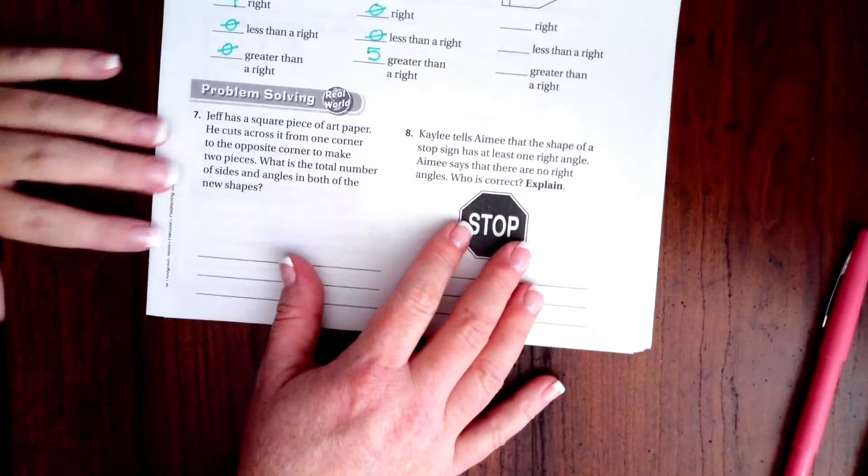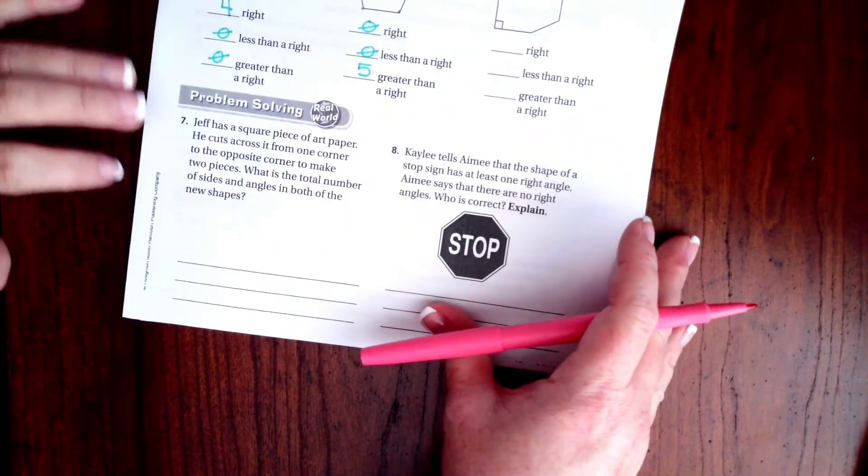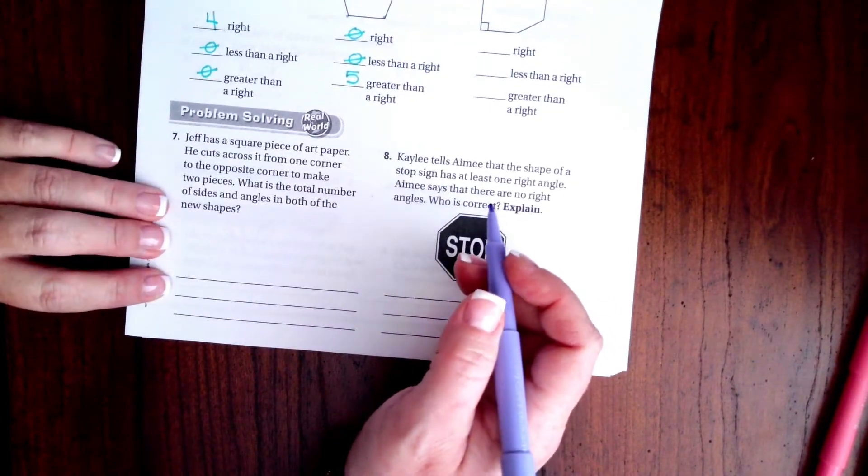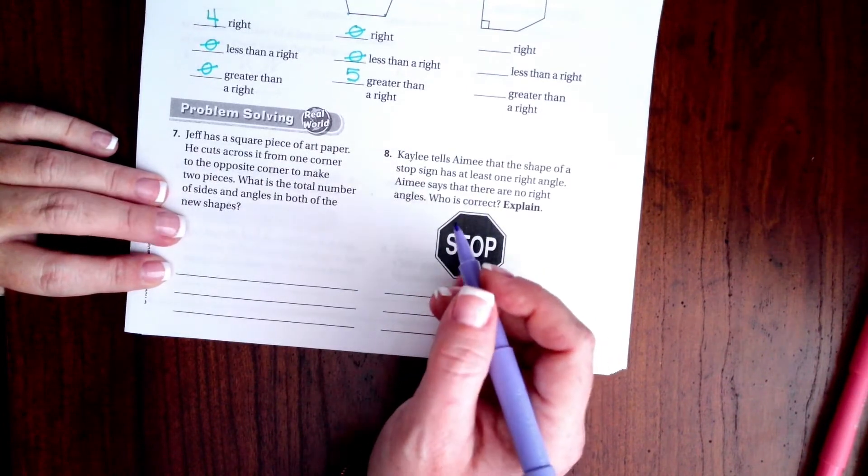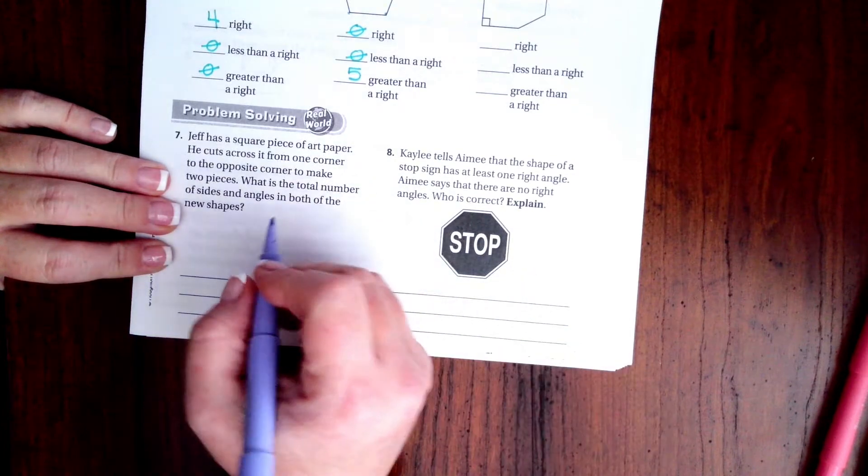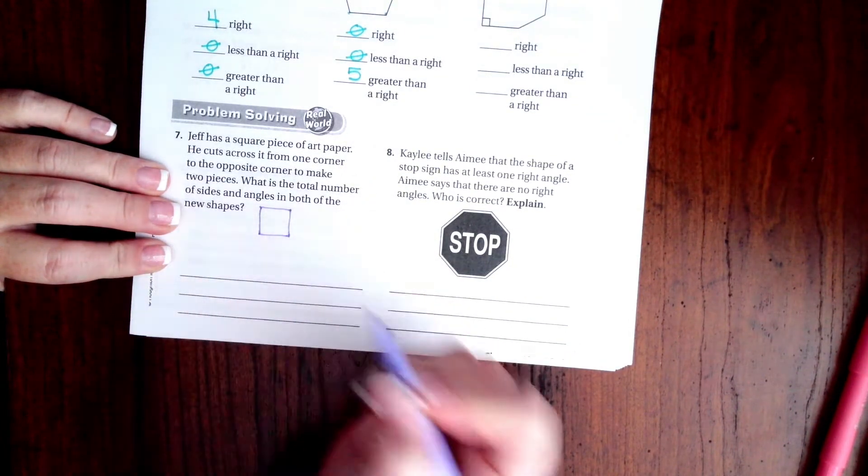We're going to go down and do number seven. It says Jeff has a square piece of art paper. He cuts across from one corner to the opposite corner to make two pieces. What is the total number of sides and angles in both of the new shapes?